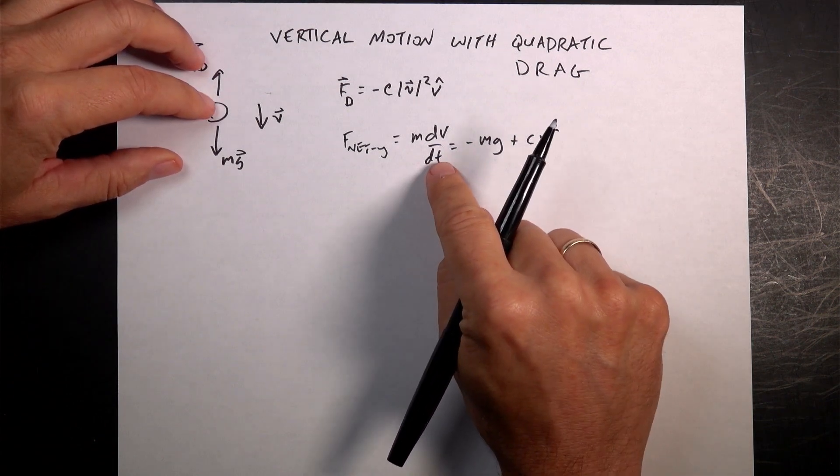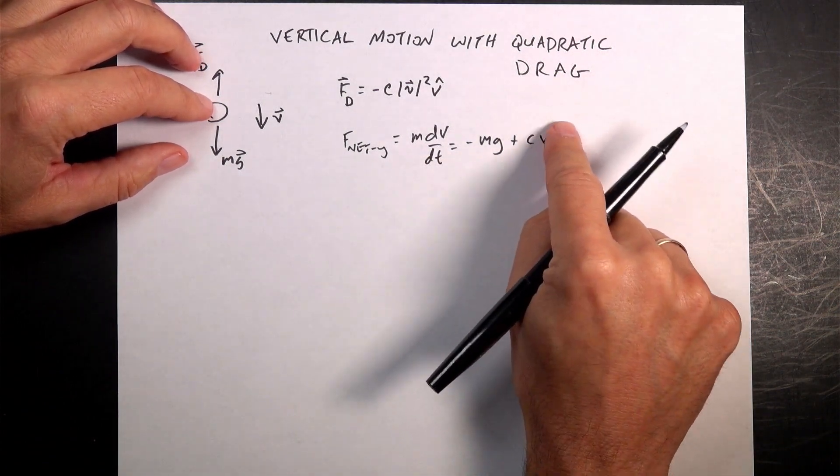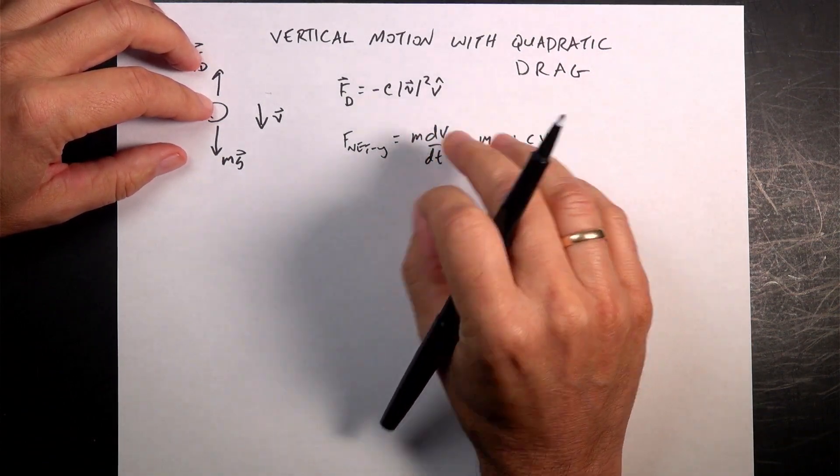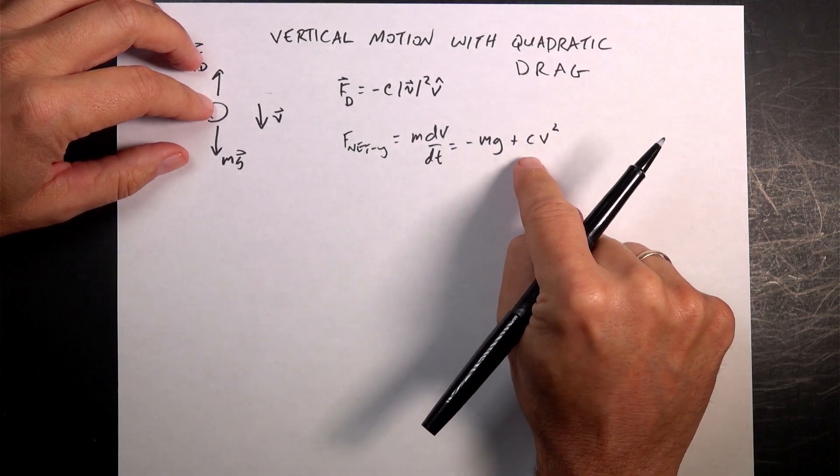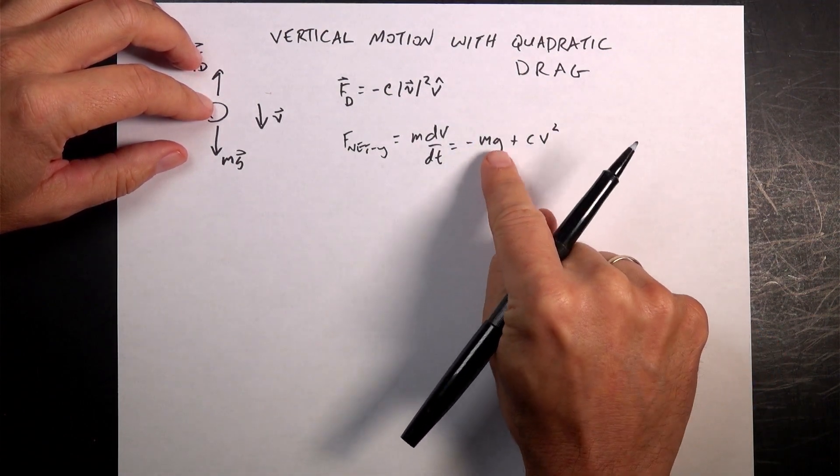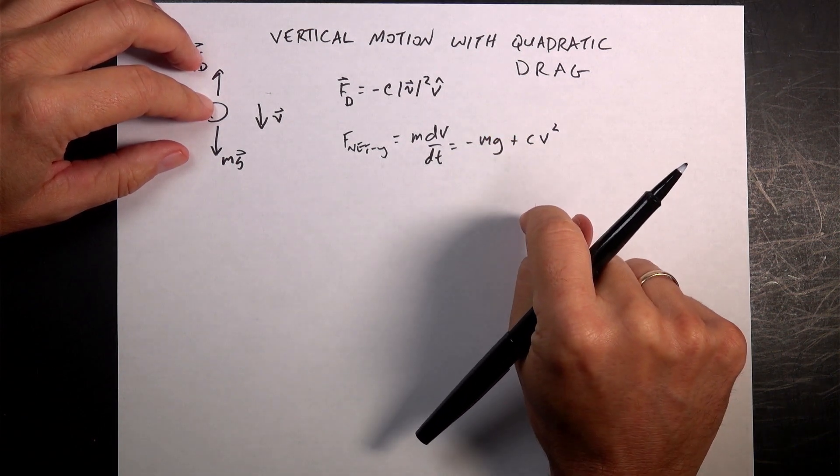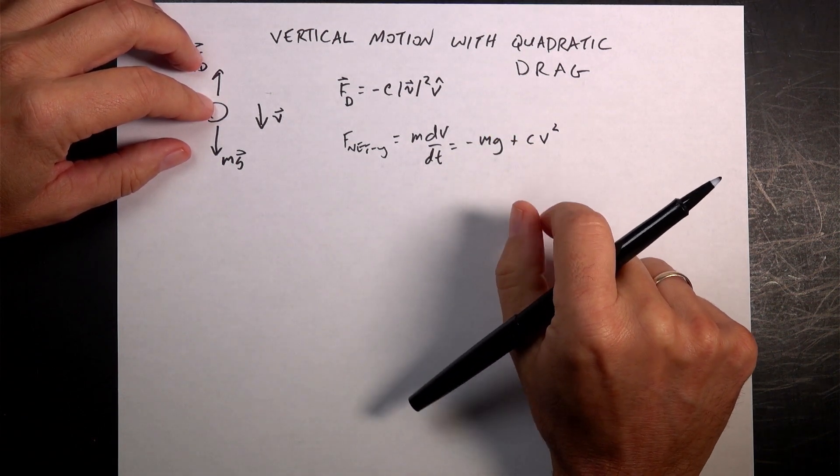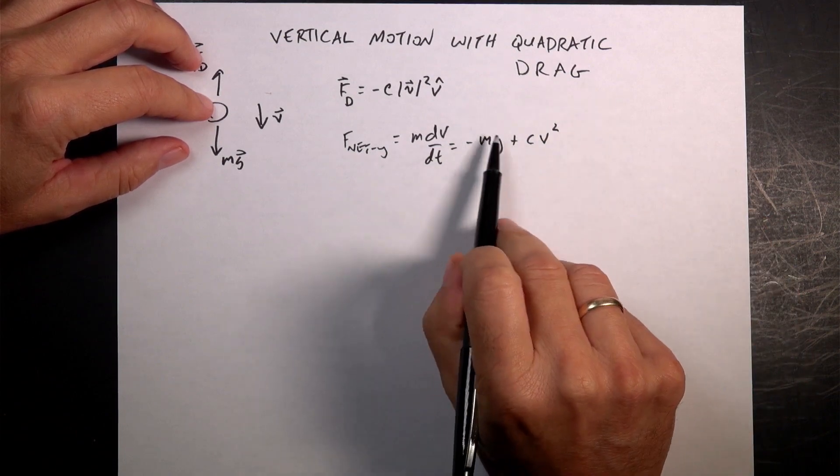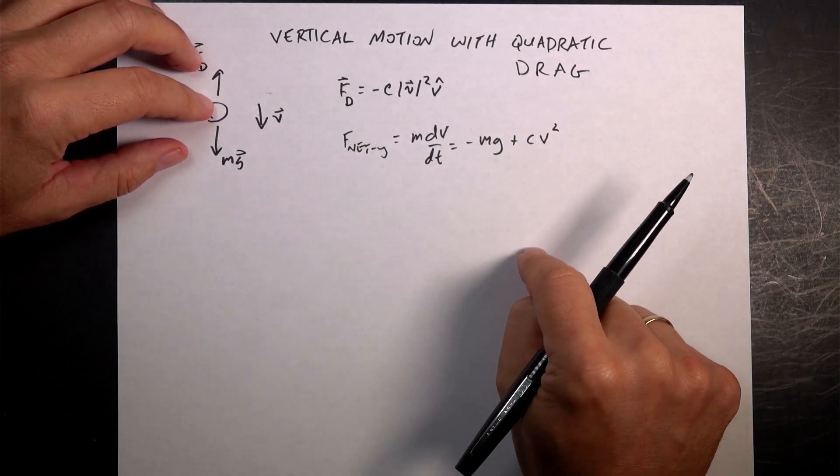Okay, so we want to get this into a separation of variables like we've done before. We're going to get all the v terms on one side. And for the case of no gravity, this term was gone. It was actually pretty, well, it wasn't hard. Well, it wasn't impossible.